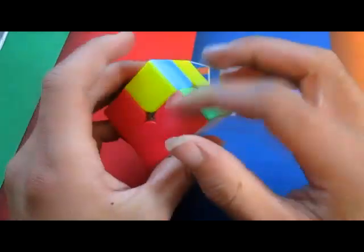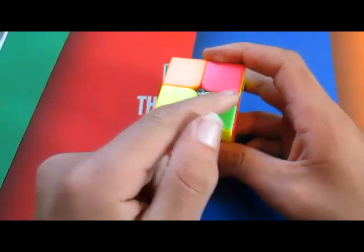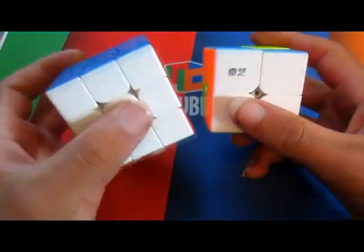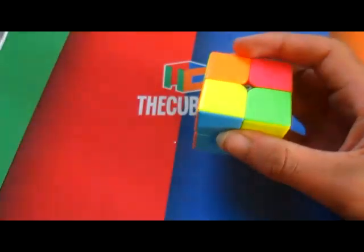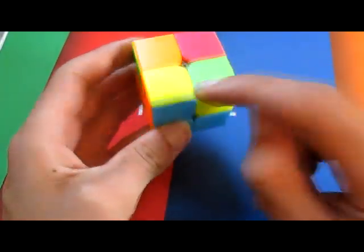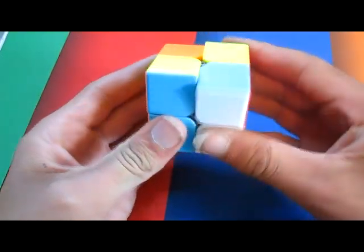Now we've solved the bottom layer. So now we need to solve all the yellows on the top layer, because if you look at white is on bottom and then yellow is on top. So we need yellow to go up here, we have one yellow piece up here, and so if you get this piece, you want to do these moves right here.